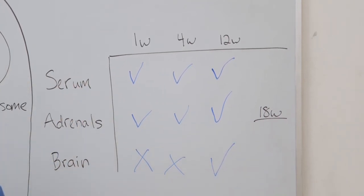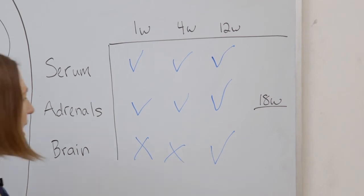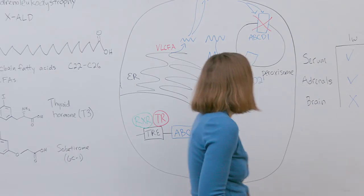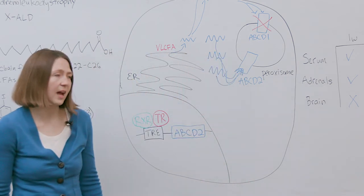We took a small group of mice out six additional weeks and measured the VLCFAs again and this time we observed additional lowering in the brain which supports our hypothesis that VLCFAs in the brain have increased half-lives.